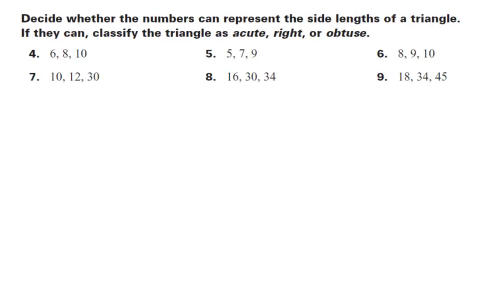These kinds of problems have four answers. One of them is acute, one is right, one is obtuse, and the fourth possible answer is you can't even make a triangle out of the side lengths that are that long. Let me give an example of that first, and then we'll look at the acute, right, and obtuse.